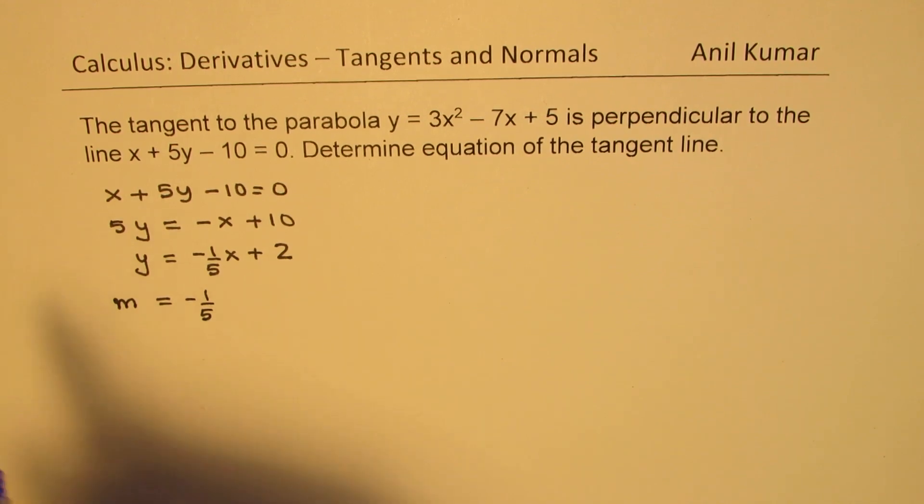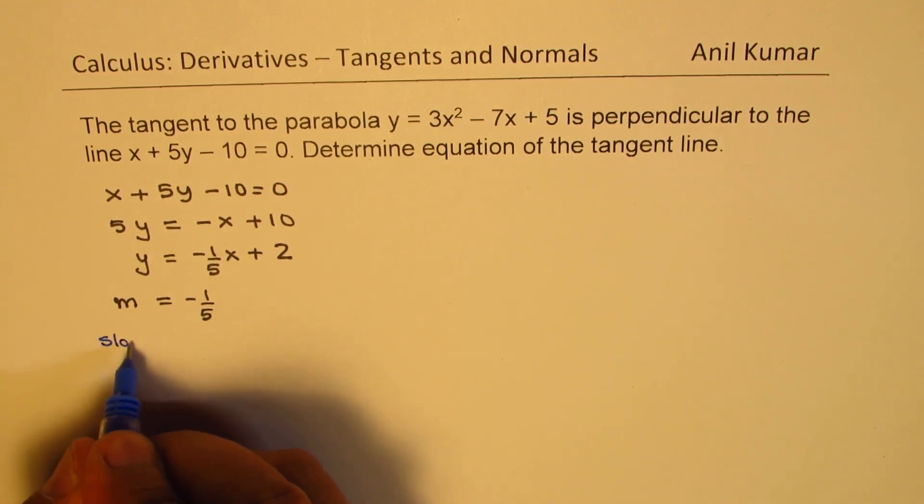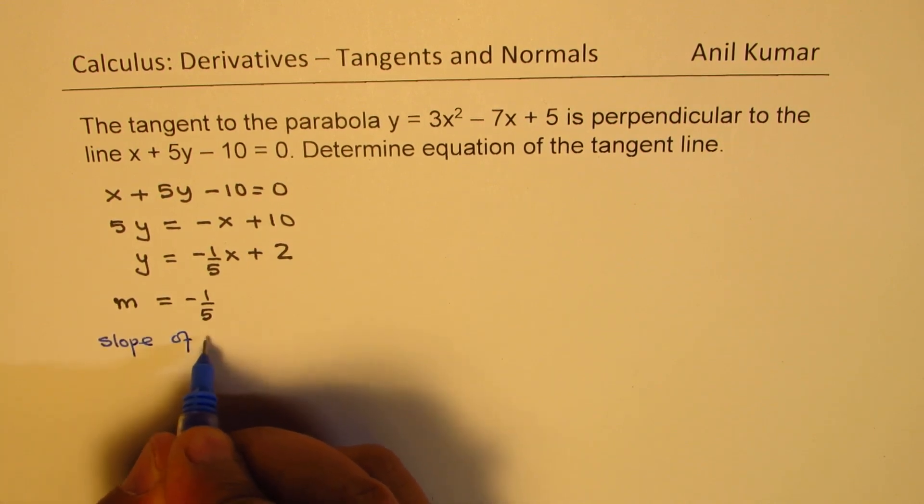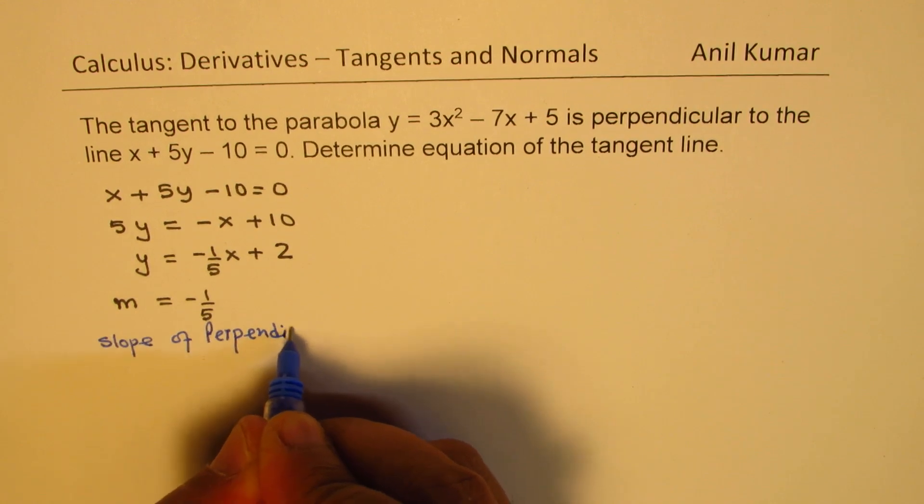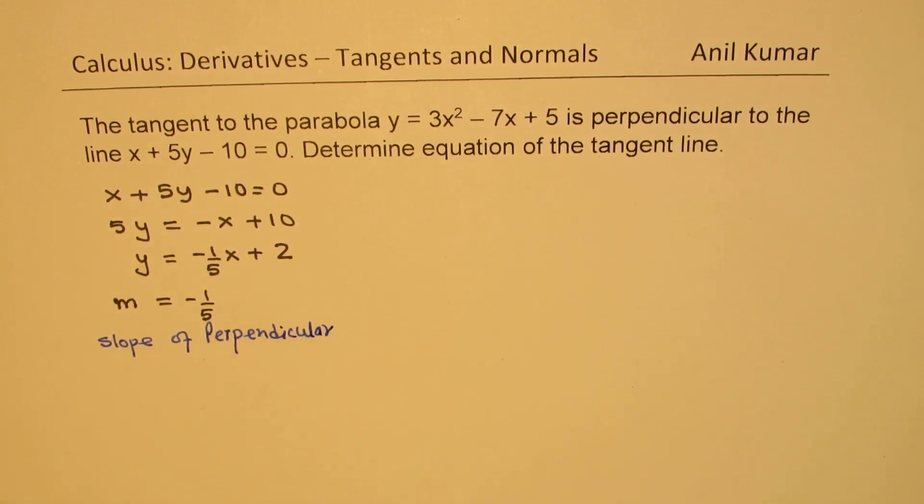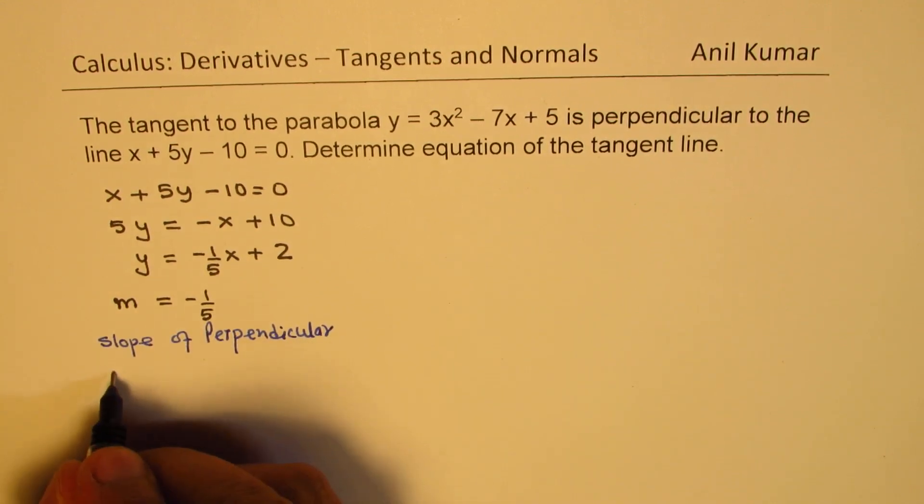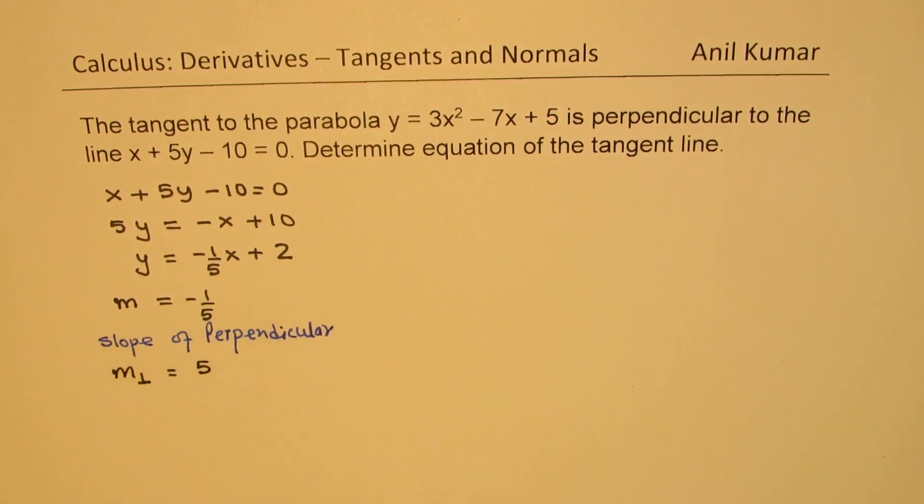Now, we are looking for slope of perpendicular. So, slope of perpendicular will be what? Negative reciprocal. So, let me write that slope as slope of perpendicular equals 5 negative reciprocal. So, that is what we know.